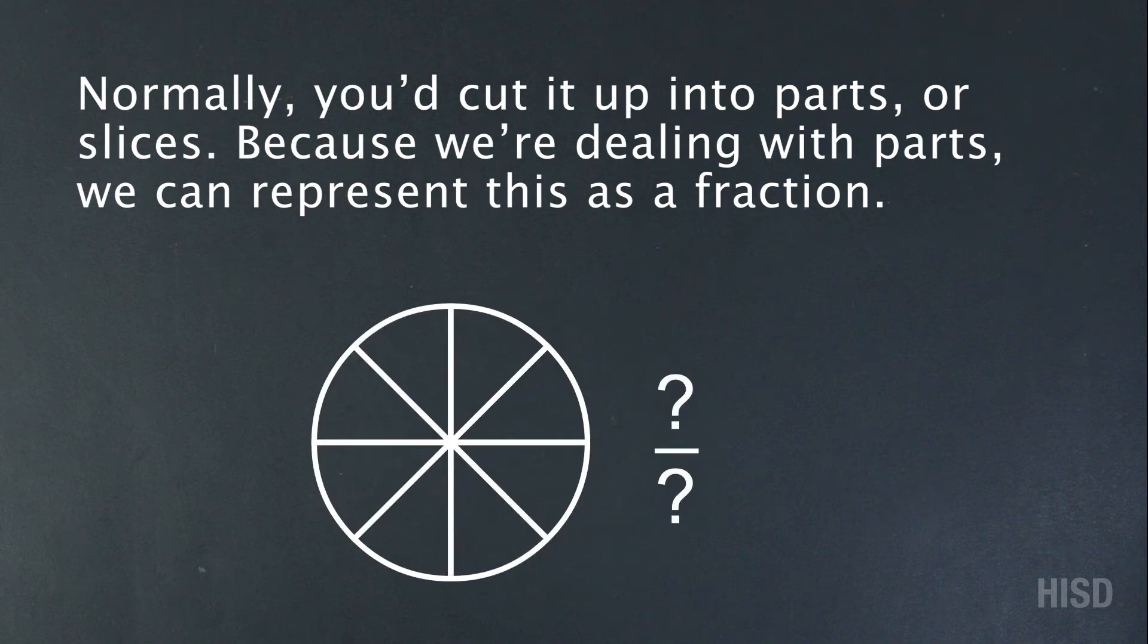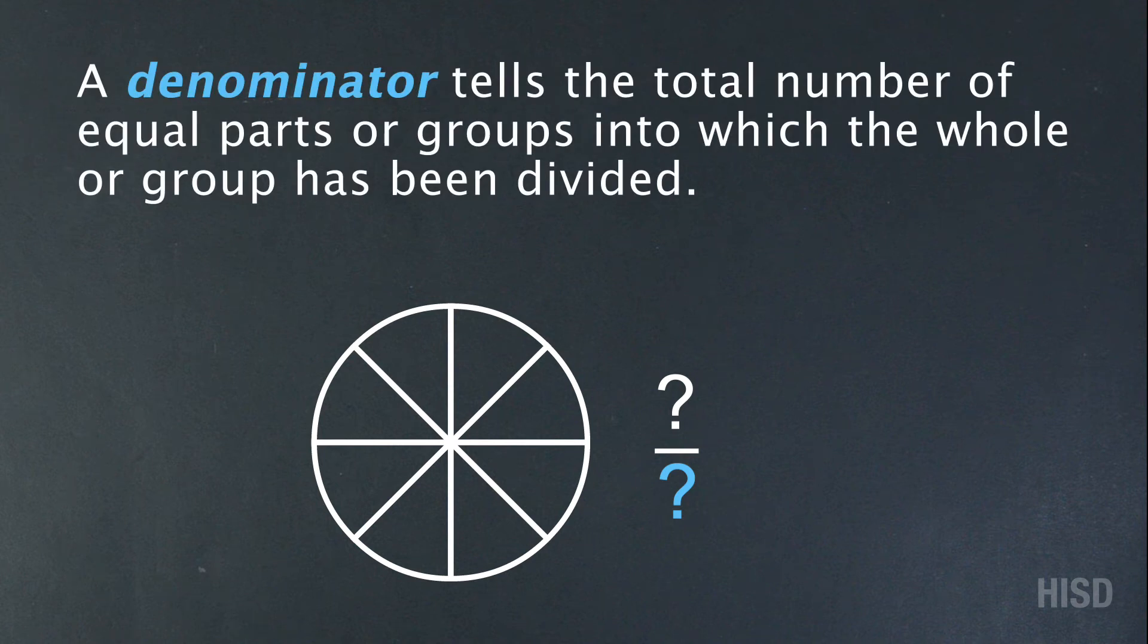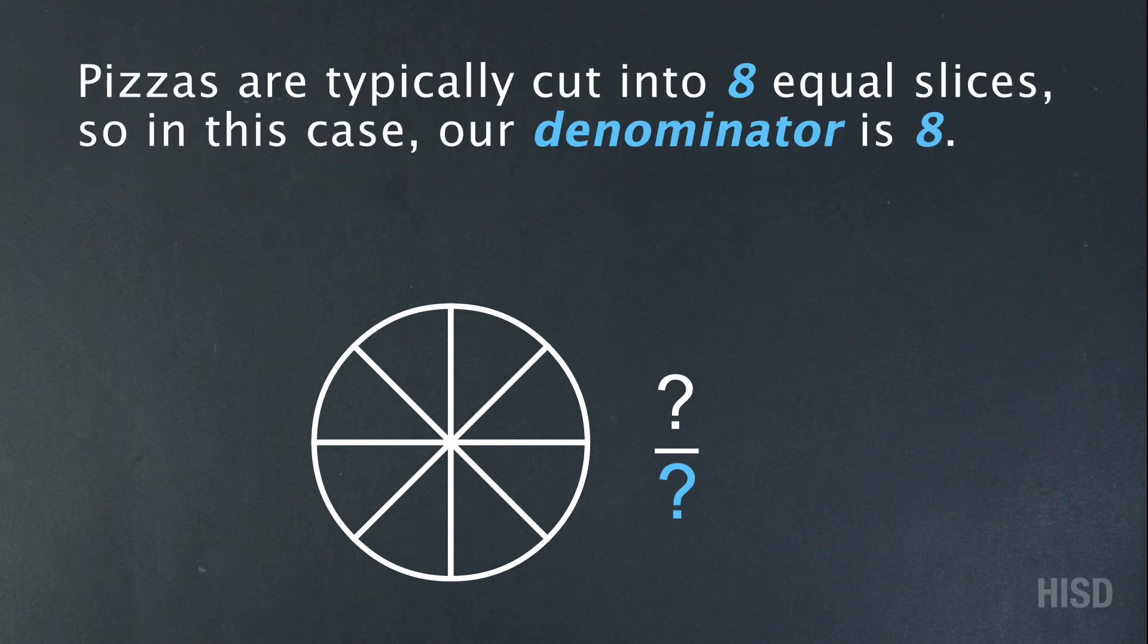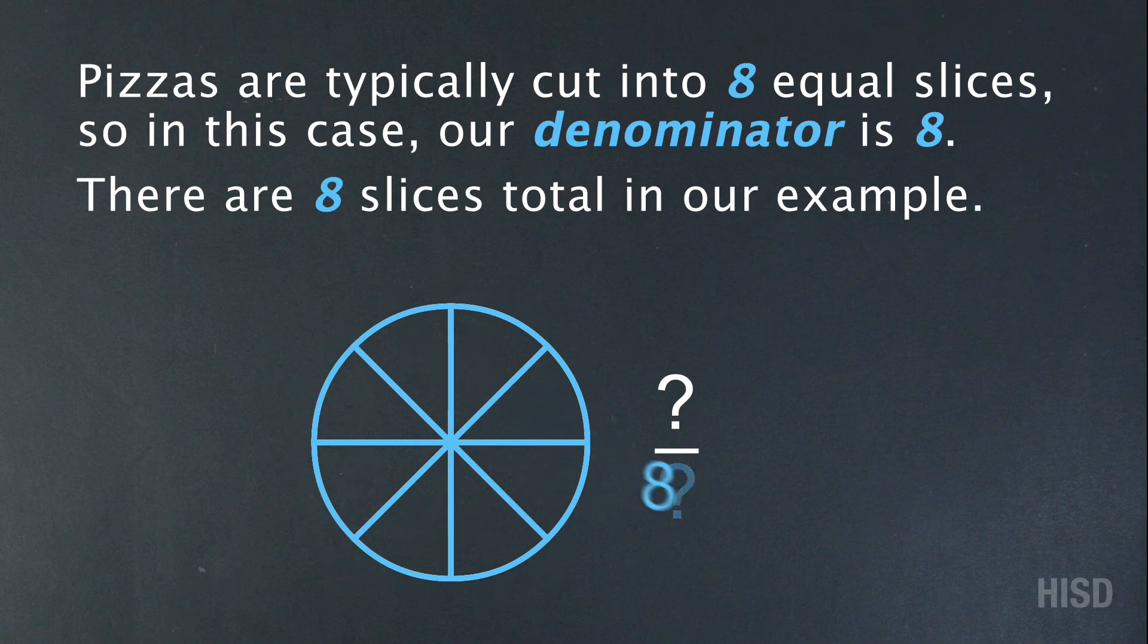There are two parts to a fraction. The number on the bottom is the denominator. A denominator tells the total number of equal parts or groups into which the whole has been divided. Pizzas are typically cut into eight equal slices, so in this case our denominator is eight. There are eight slices total in our example.